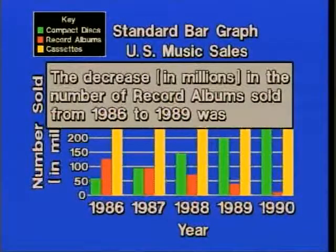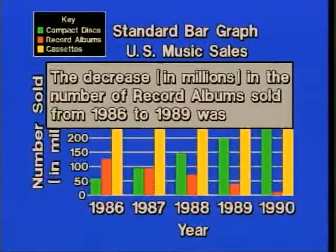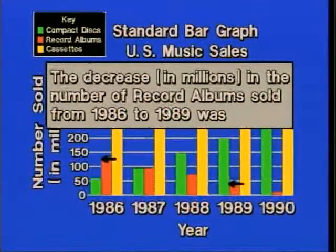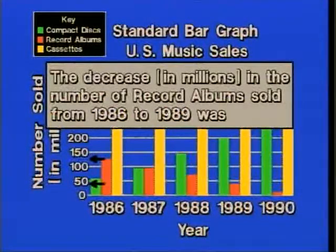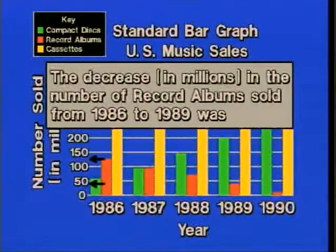Consider the decrease in millions in record albums sold from 1986 to 1989. Record albums are the items in red, and we notice a general trend downward. Specifically, we look at 1986 and 1989, and over to the left axis we look at the difference between those two levels. The idea is: start at the bottom, look up to the top of a particular bar, and note differences on the left-hand vertical axis.